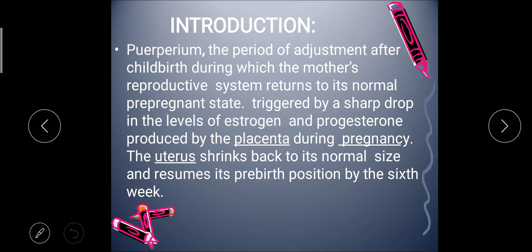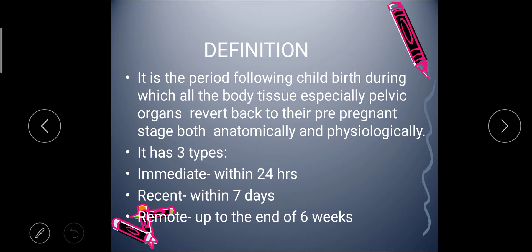The uterus shrinks back to its normal size and resumes its pre-birth position by the sixth week. So puerperium means it is a stage after delivery. In this stage, all the reproductive organs come back to their normal position — the pre-pregnant state — gradually and slowly, not directly. This is the period we call the postnatal period or puerperium. In this chapter, we are going to study what complications we have in this period. The definition of puerperium: it is the period following childbirth during which all the body tissues, especially pelvic organs, revert back to their pre-pregnant state both anatomically and physiologically.